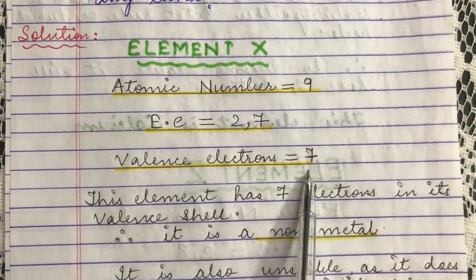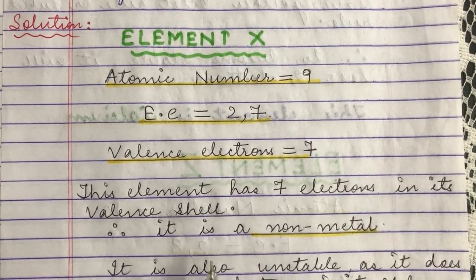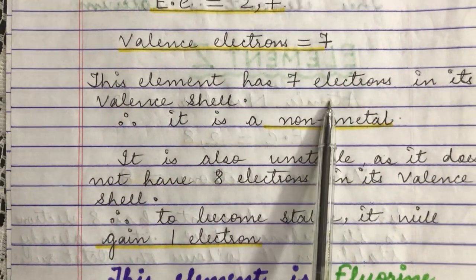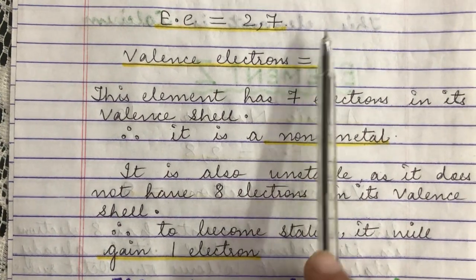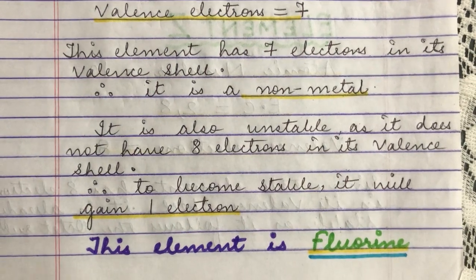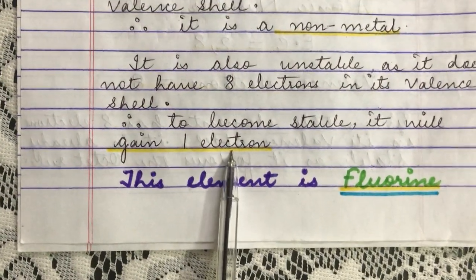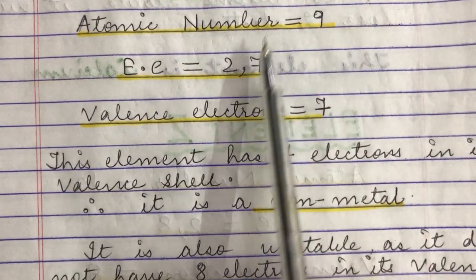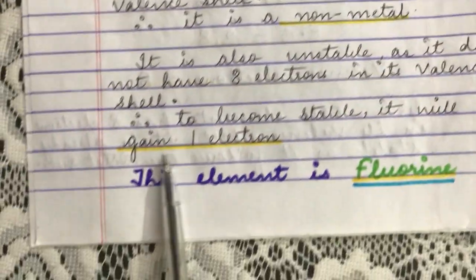As discussed in previous videos, any element having 5, 6 or 7 valence electrons is said to be a non-metal. Therefore, this element is a non-metal. Since it has 7 electrons in its outermost shell, it is not a stable atom. To become stable, it is going to gain 1 electron, giving it 8 electrons in the outermost shell and achieving stability.